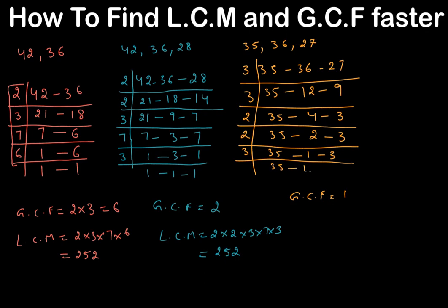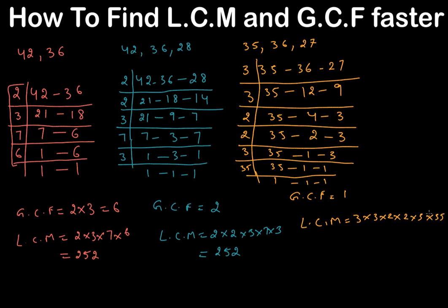Continuing: with 35, 1, and 3 remaining, applying 3 gives 35, 1, and 1. Then one more step leaves 35, 1, 1, and 1. LCM is the product of all divisors: 3 times 3 times 2 times 2 times 3 times 35, which equals 3780. This is much faster than writing out all the multiples, which takes a long time especially when multiplying by 35.